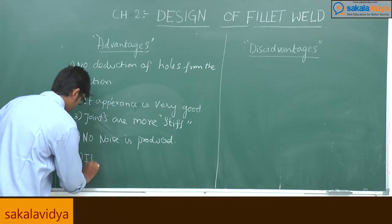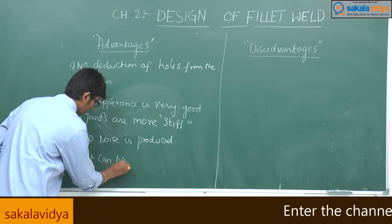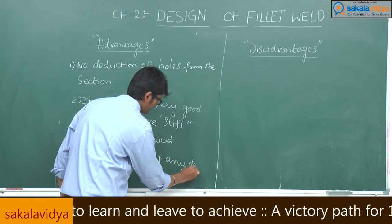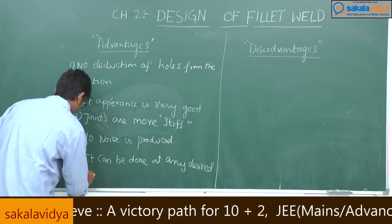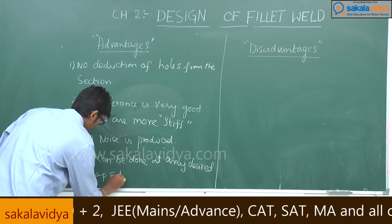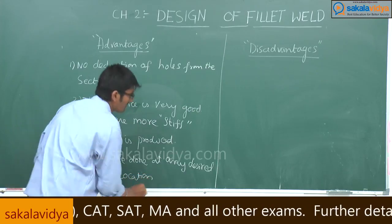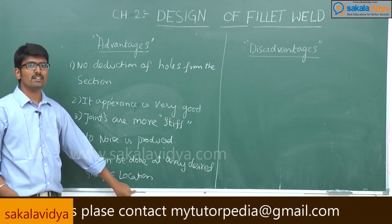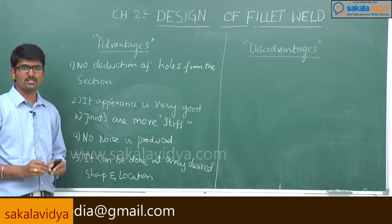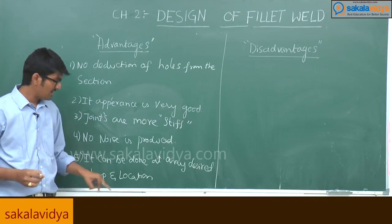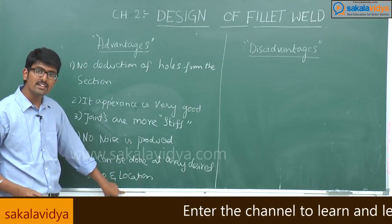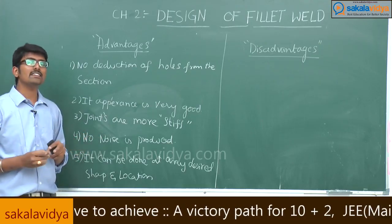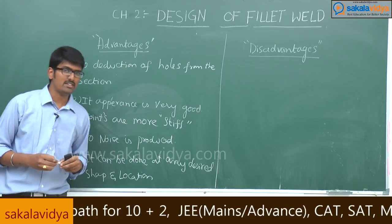The fifth advantage is that welding can be done at any desired shape and location. For example, at an edge-to-edge joint, you cannot place a bolt because it may break, tear, or cause bearing failure. But with welding, you can easily join at the bottom or any location.